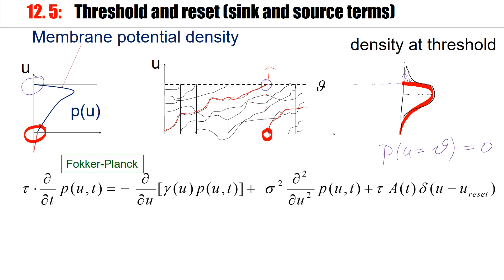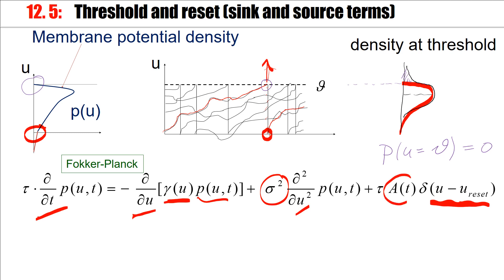The Fokker-Planck equation describes the change of the membrane potential density. It has a drift or velocity term proportional to the density, and then it has a sigma-squared variance term proportional to the second derivative. Spikes are sent at threshold, and then the membrane potential reappears at the reset potential — this gives the little kink mentioned. The number of spikes per unit time emitted is exactly the quantity A of t, and each membrane potential that hits the threshold is deleted there and re-inserted at U-reset, which is the factor appearing in front of the delta function.